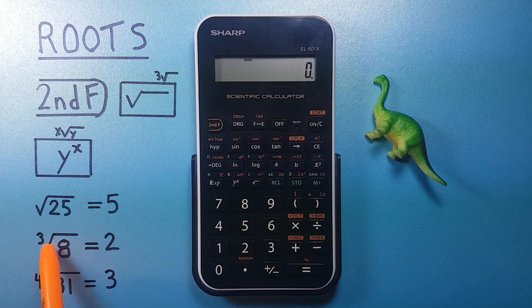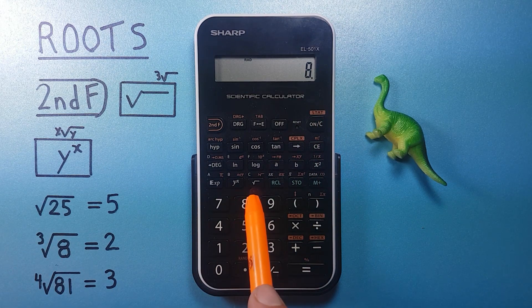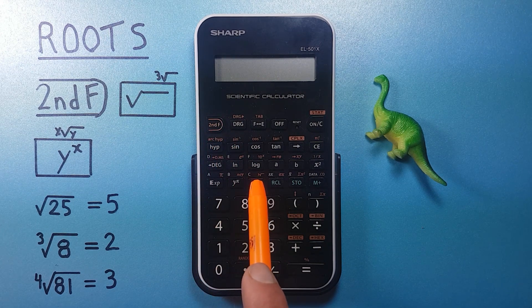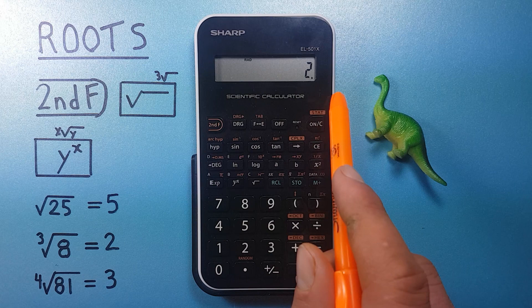We want to find a cube root. Again we place the number on the screen, then go second function of the square root, and this gives us the cube root.